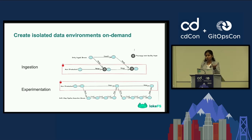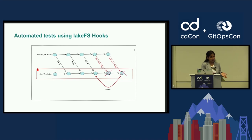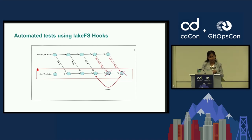These are a couple of use cases for isolated data environments using LakeFS branches. Depending on whatever other use cases you may have, you can leverage these Git-like APIs for that as well. Now, how do you make sure the merge or branch creation happens only when tests are successful? LakeFS has features called LakeFS hooks, which are similar to Git hooks. You can define the rules — the conditions — on which you want these operations to succeed. You can have a pre-merge hook that will run, and only if the constraints are satisfied will the merge succeed; if not, it automatically reverts to a previous commit, avoiding low-quality data getting ingested into production.